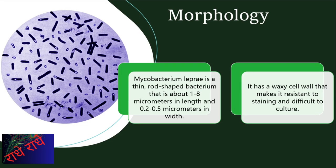Mycobacterium leprae is a species of gram-positive bacteria. Characterized by its thin, rod-like shape and a waxy cell wall that enables it to resist common staining methods and makes it challenging to culture in labs, it has a size of 1 to 8 micrometers in length and 0.2 to 0.5 micrometers in width.